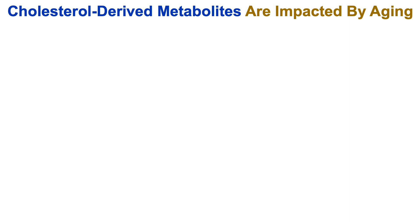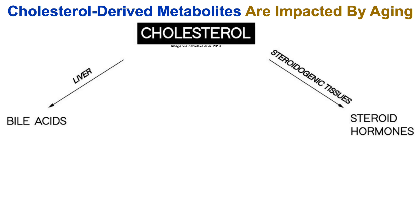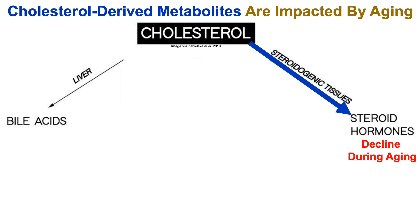Cholesterol-derived metabolites are impacted by aging. For example, cholesterol is converted into steroid hormones, which decline during aging.